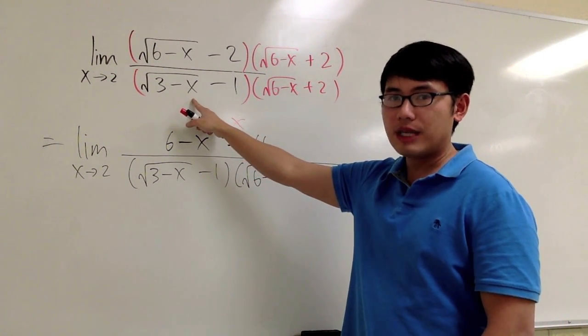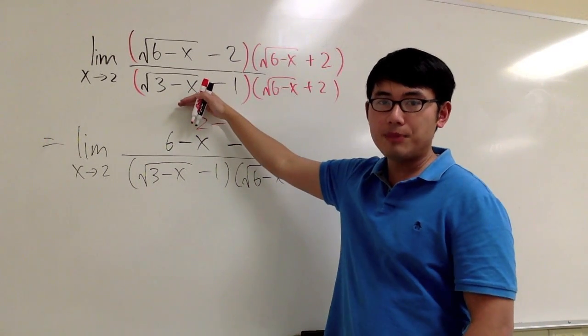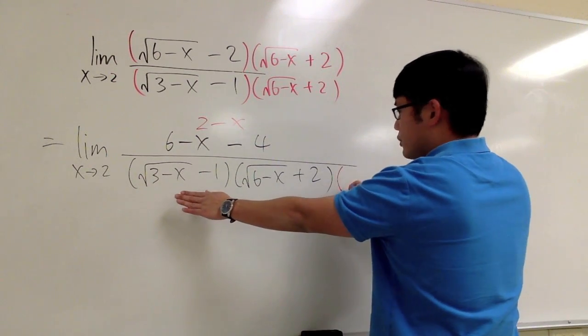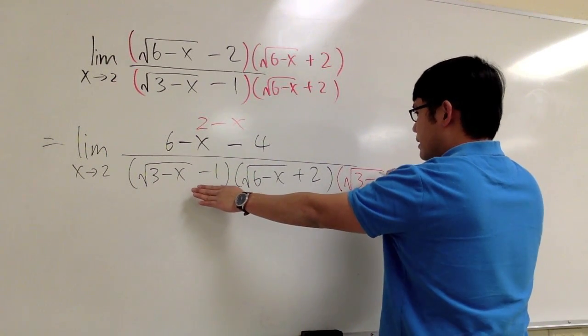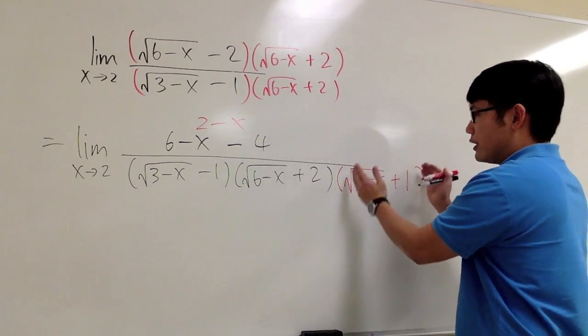So now what we are going to do is multiply the top and bottom by the conjugate of this part. Focus on this and take the conjugate of that, which is square root of 3 minus x and then plus 1. And I will do the same on the top.